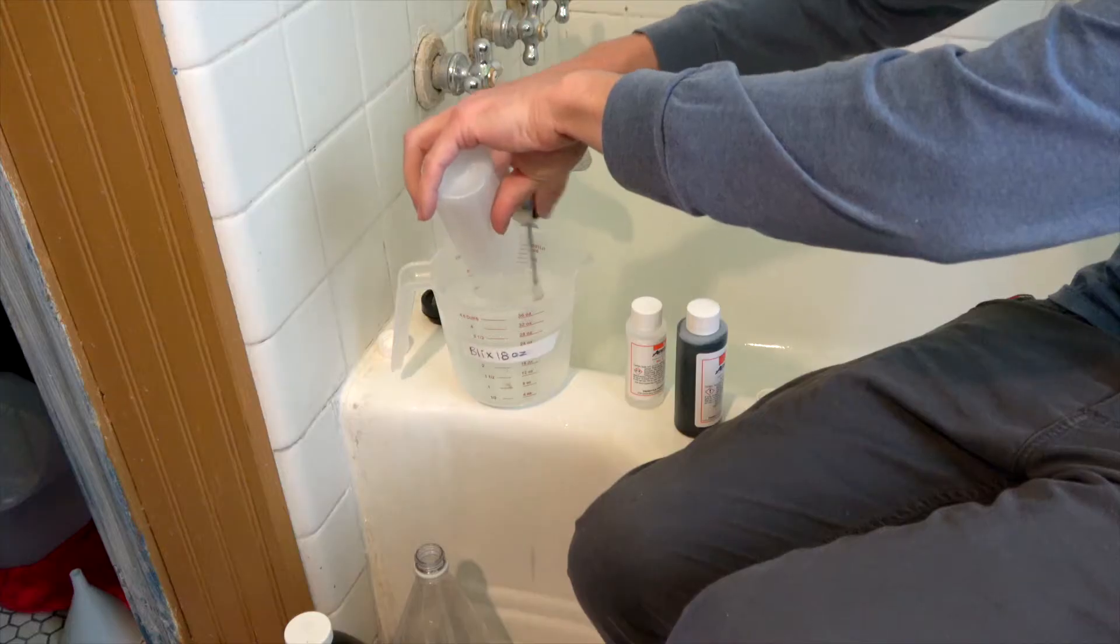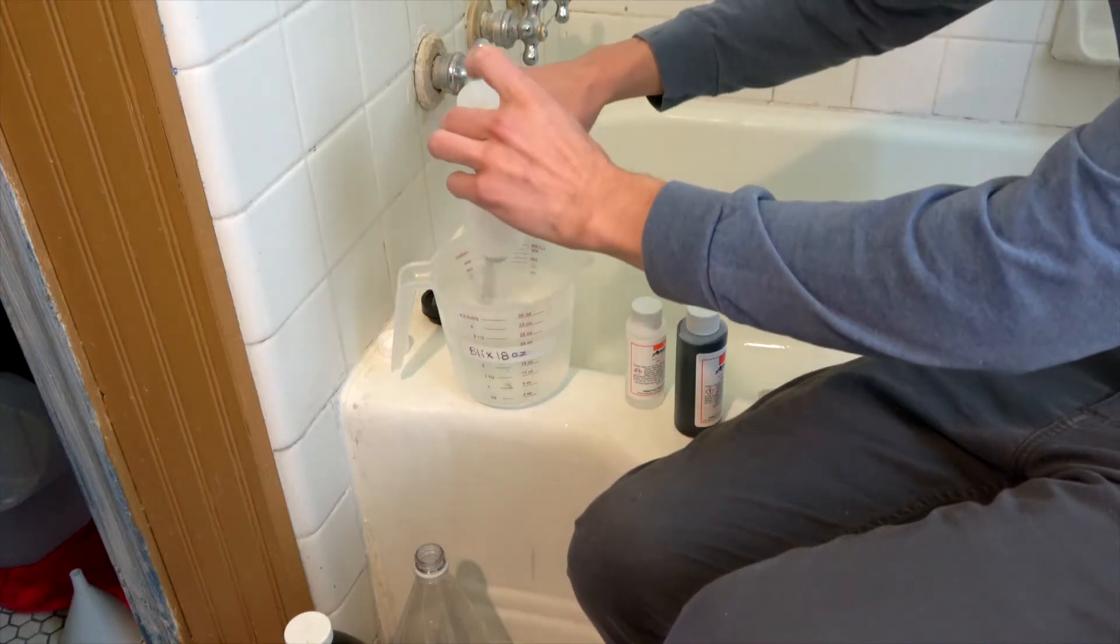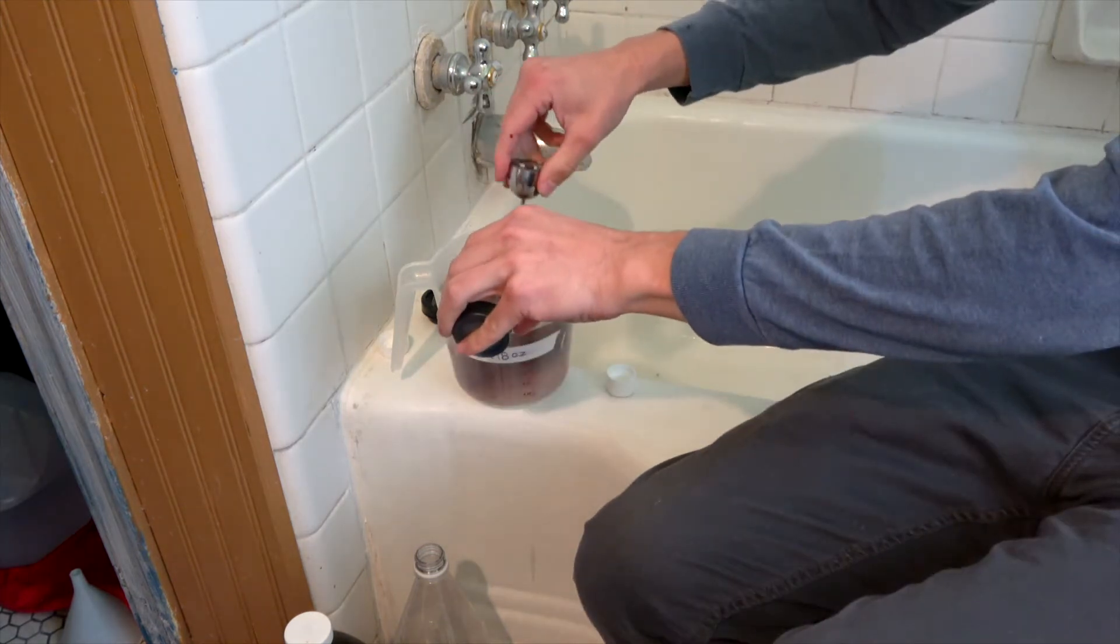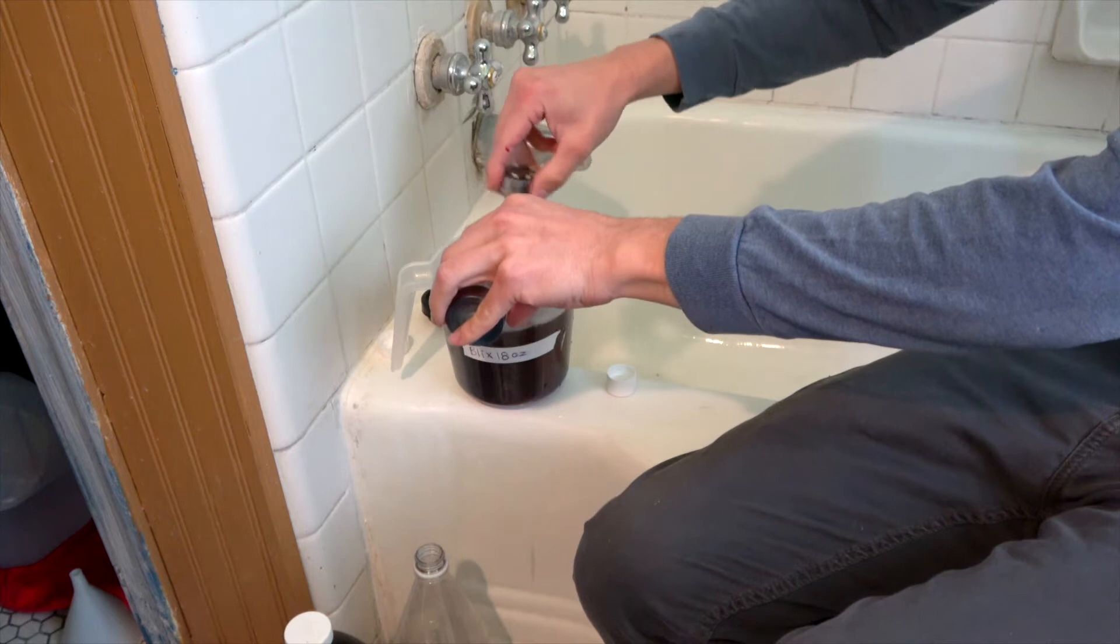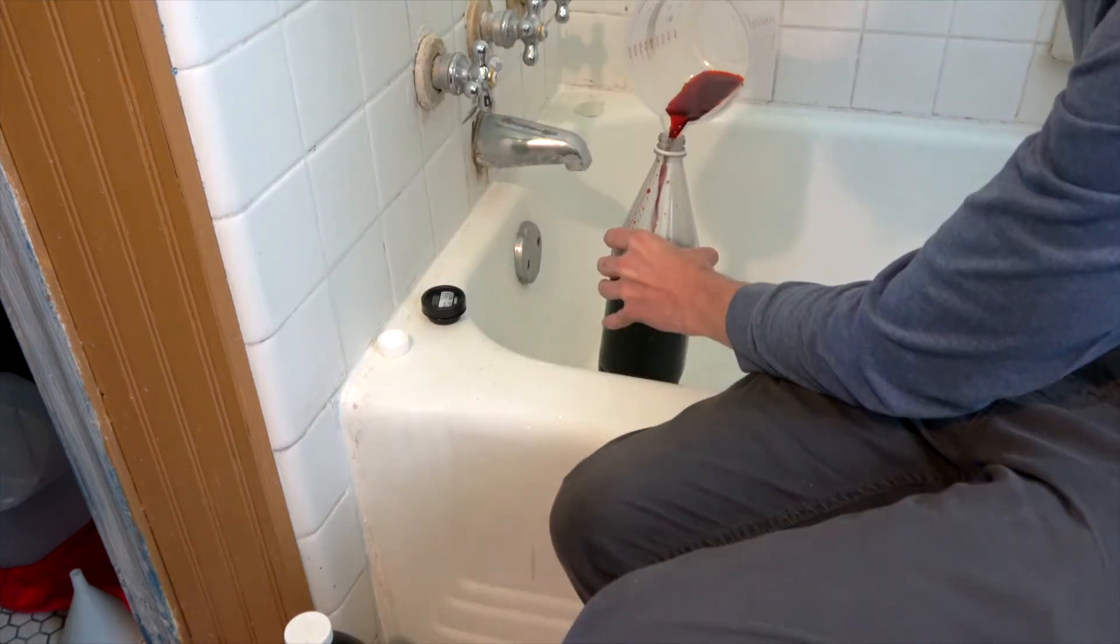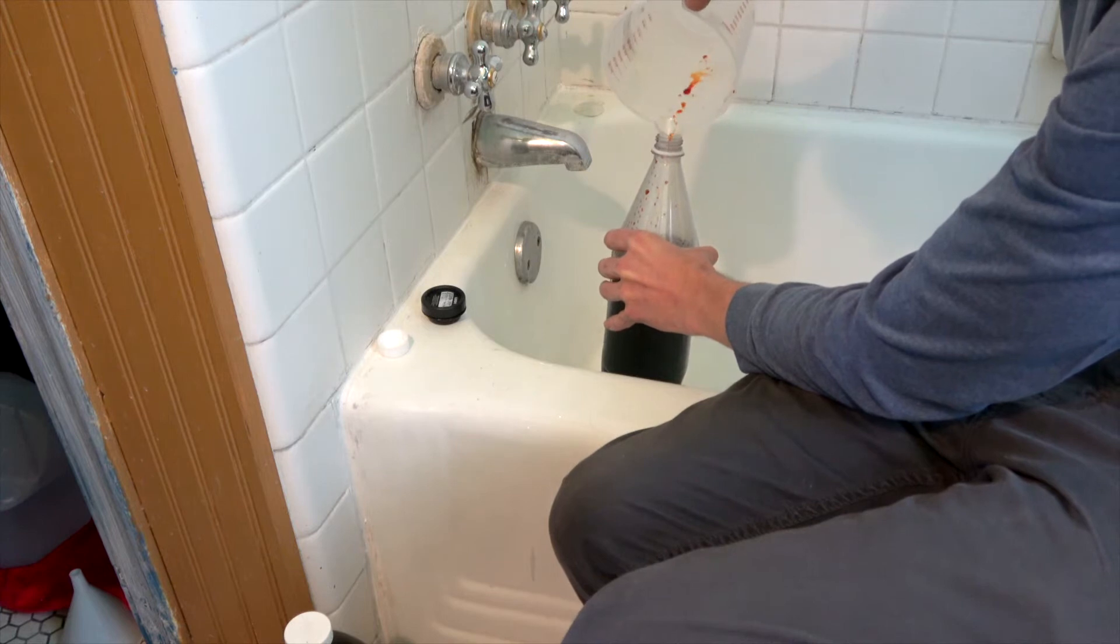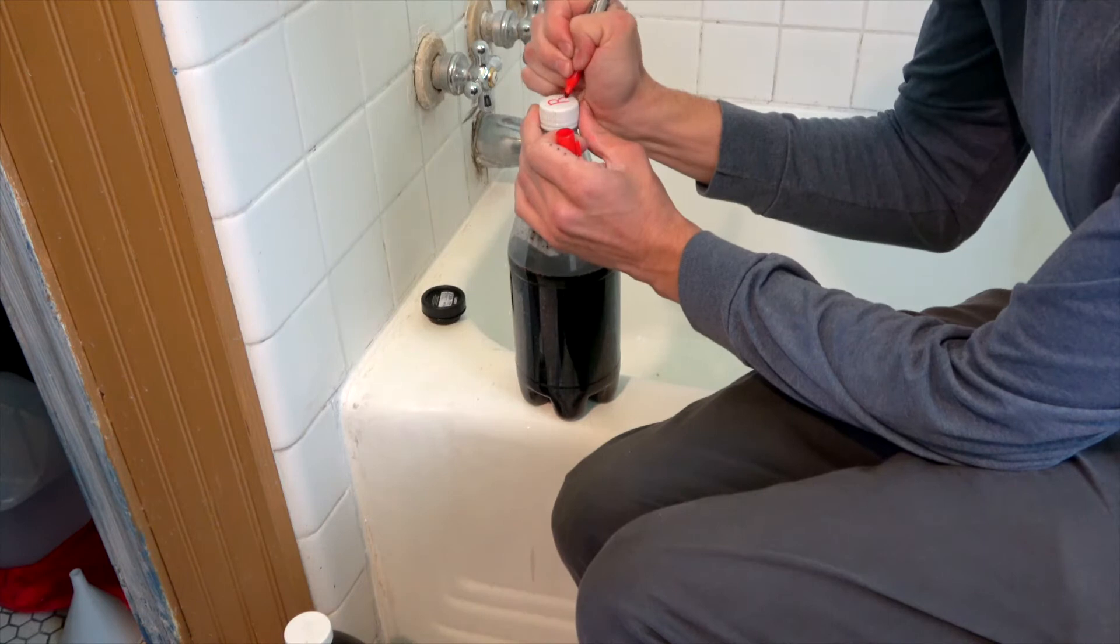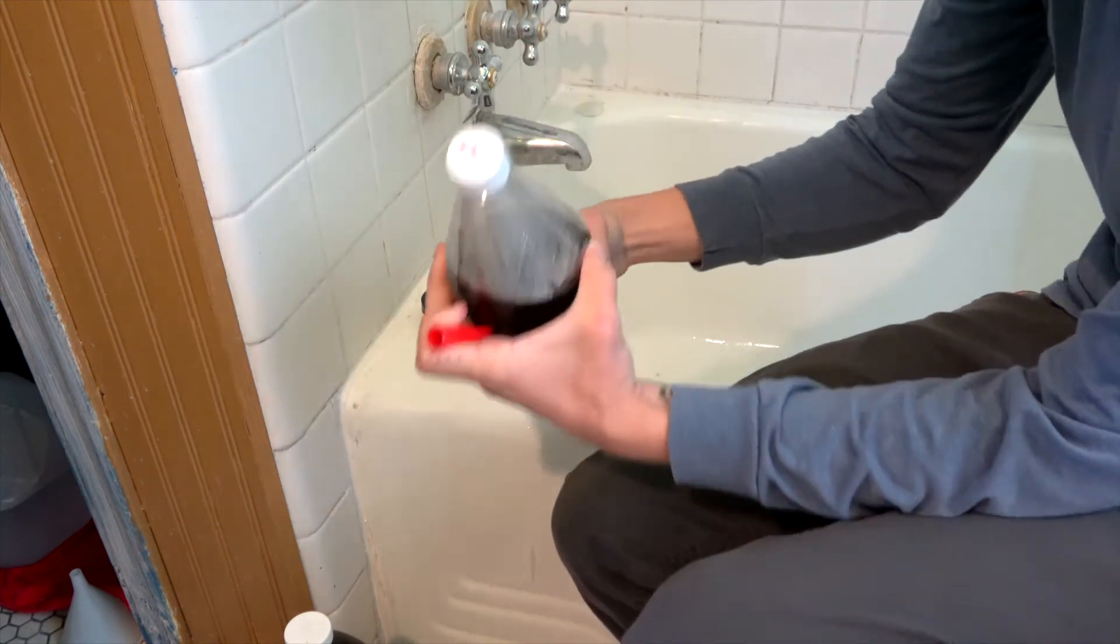Next step is mixing up our blix, which is bleach fixer. It comes with a part A, part B, and part C. You want to be sure you mix them in order following the instructions and stir really well. Both the developer and the blix mix with high temperature water, so be sure to use that high temperature listed in your instructions. Be sure to mark your blix bottle with a B so that you know it's your blix.